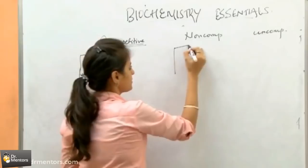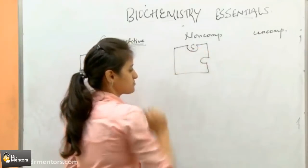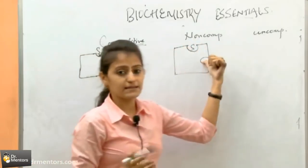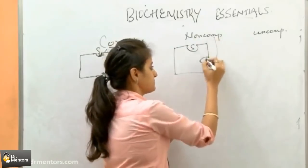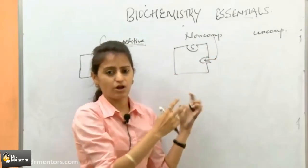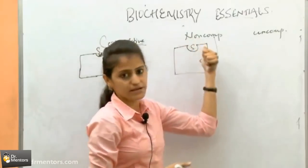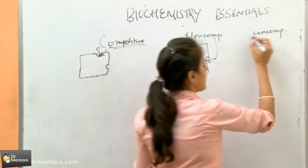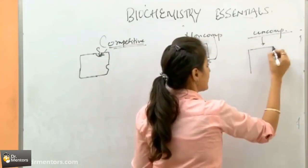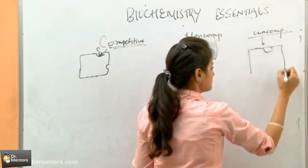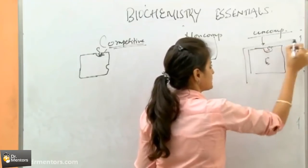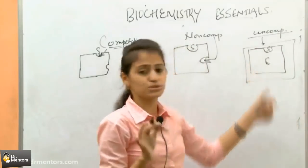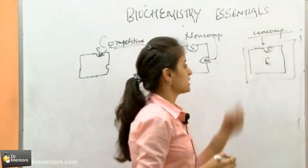In non-competitive inhibition, this is a substrate binding site. Non-competitive means it is not competing with the substrate, so it will bind at some other site and induce a conformational change in the enzyme, so that binding to the substrate and the reaction is reduced. Uncompetitive inhibition means it binds only to the enzyme-substrate complex, not to the enzyme itself.